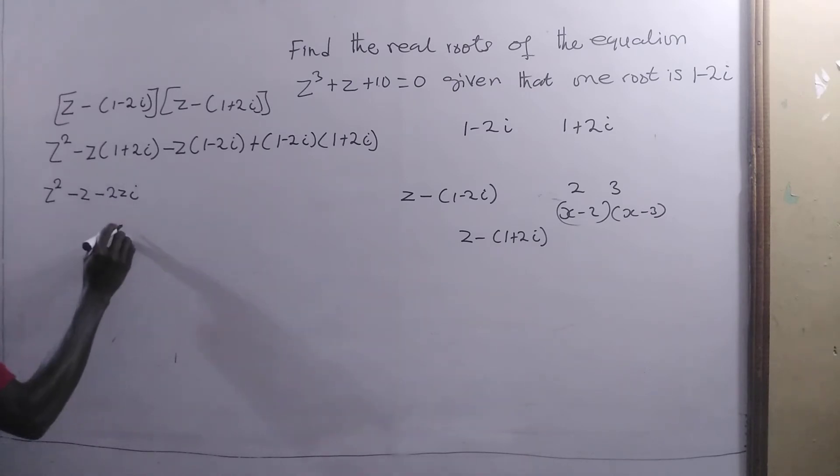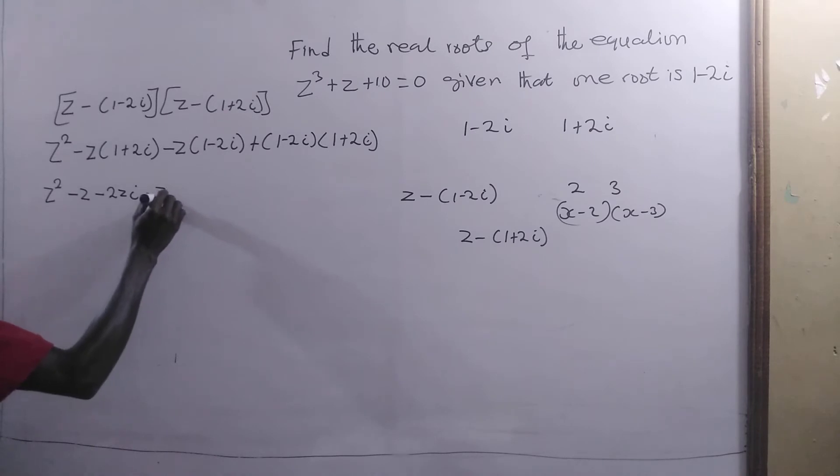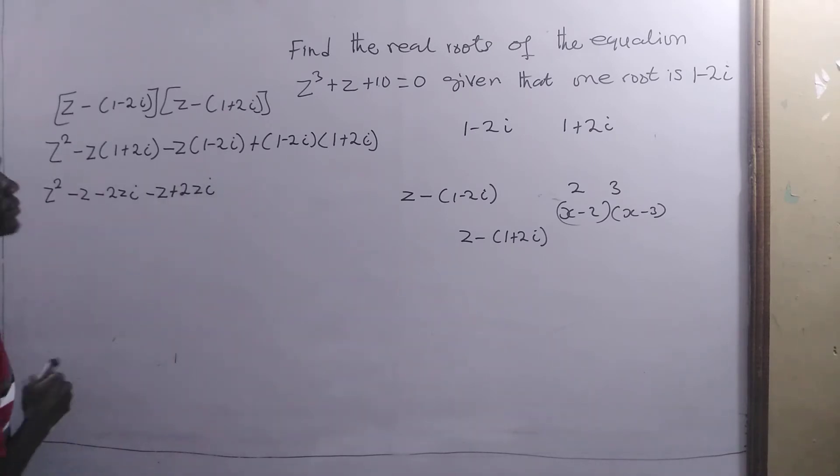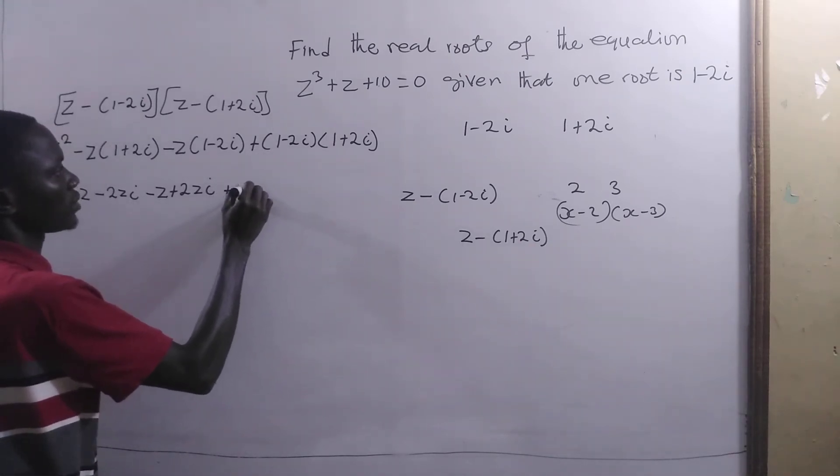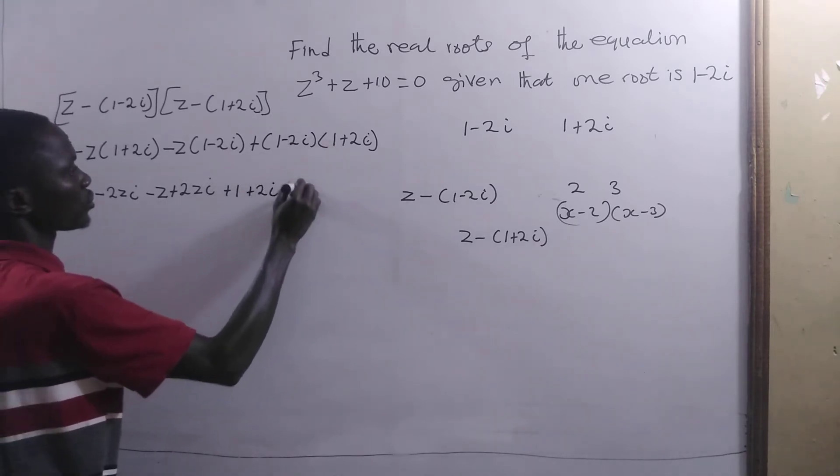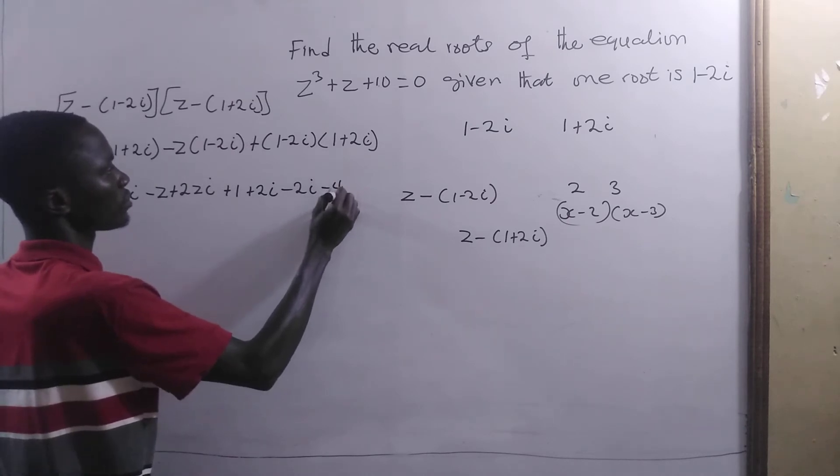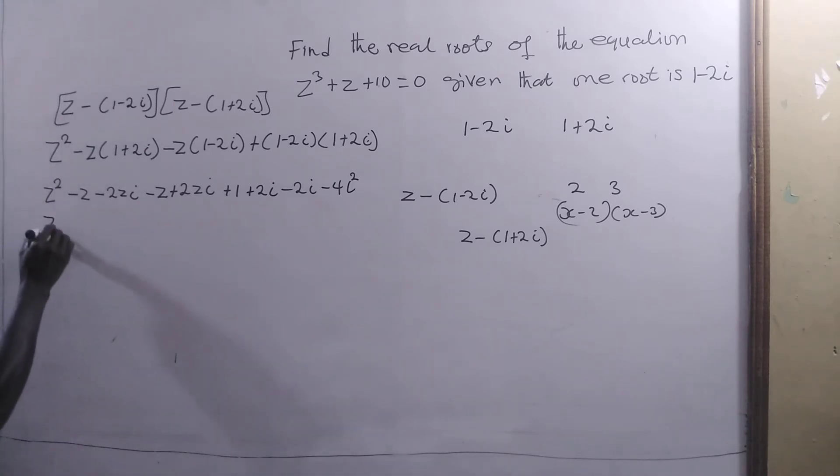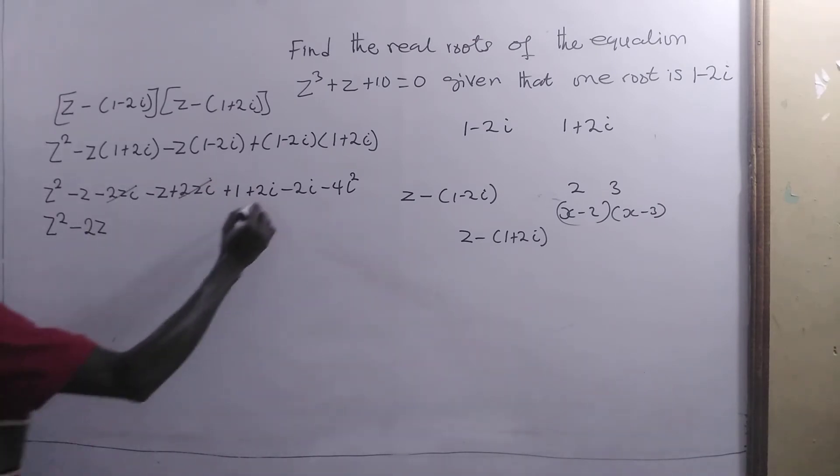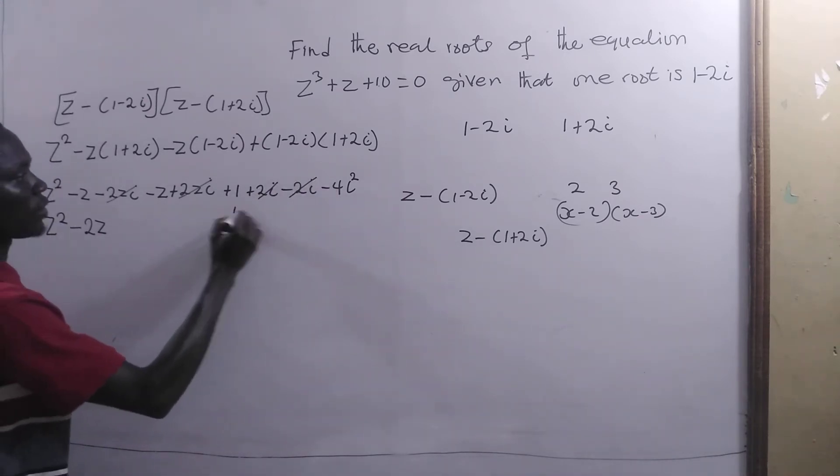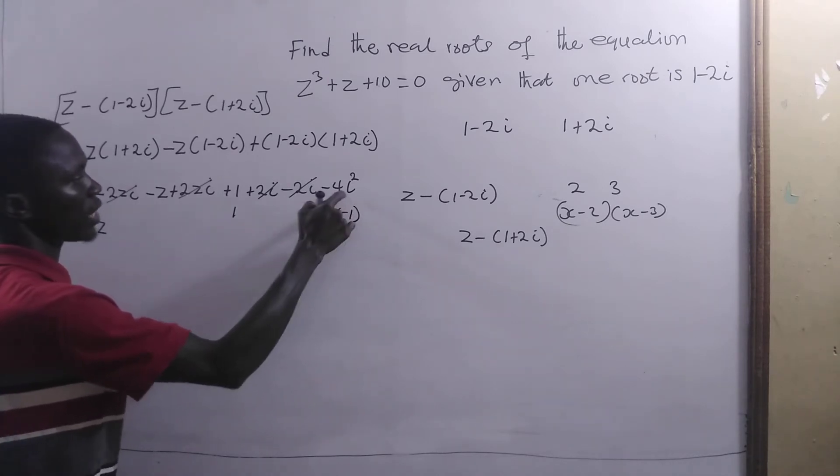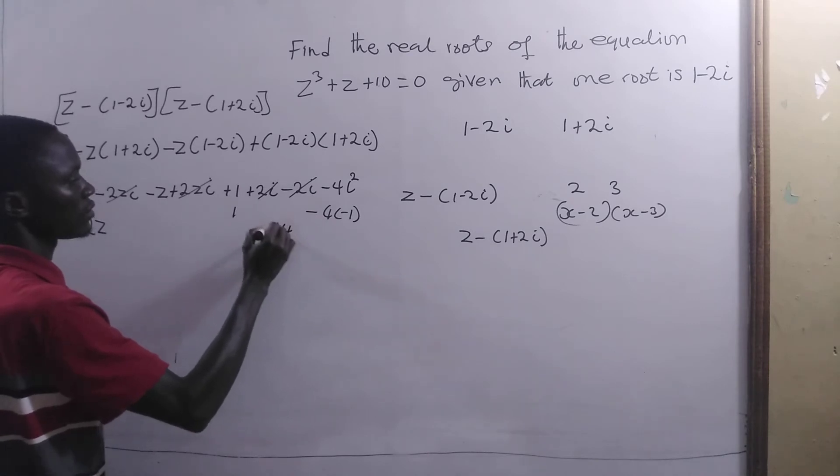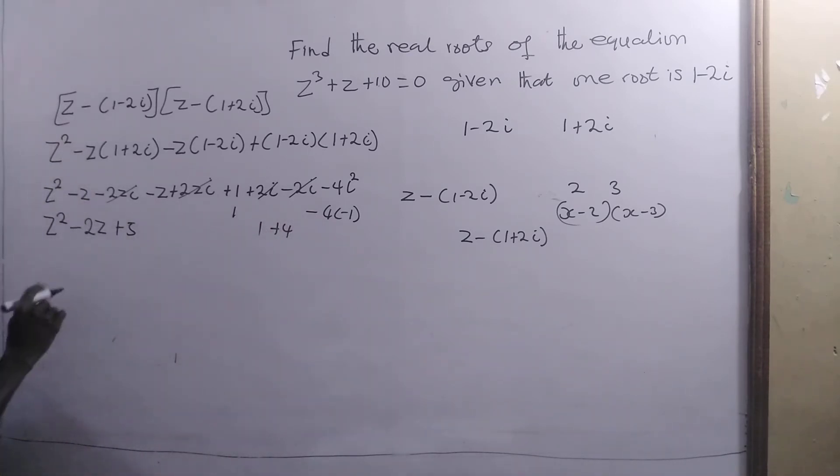Here we are having +1 + 2i - 2i - 4i². We are going to have z² - z - z - 2z, and this will cancel with this. We have +1 and here we have -4 times -1, because i² is -1, to give us +4. Now we have +5.